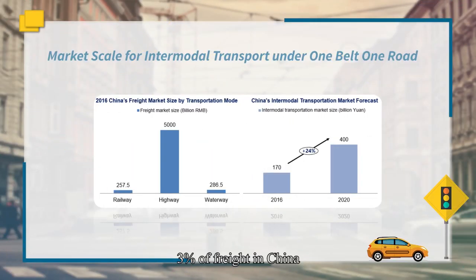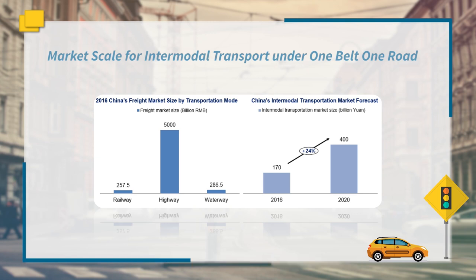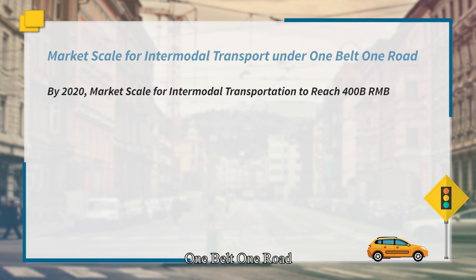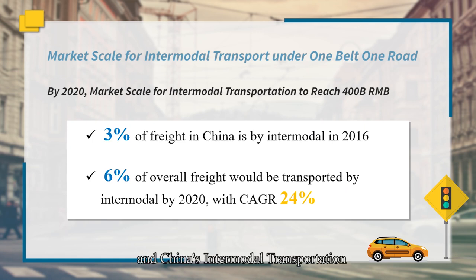It also shows that 3% of freight in China was transported by intermodal in 2016, and 6% of overall freight would be transported by intermodal by 2020. By 2020, the market scale for intermodal transportation would reach 400 billion RMB. The market scale for intermodal transport has made great progress under One Belt One Road. The figure shows China's 2016 freight market size by transportation mode and China's intermodal transportation landscape.